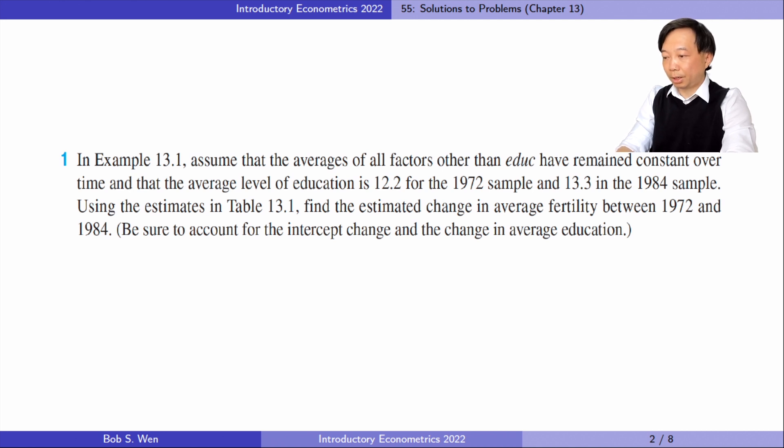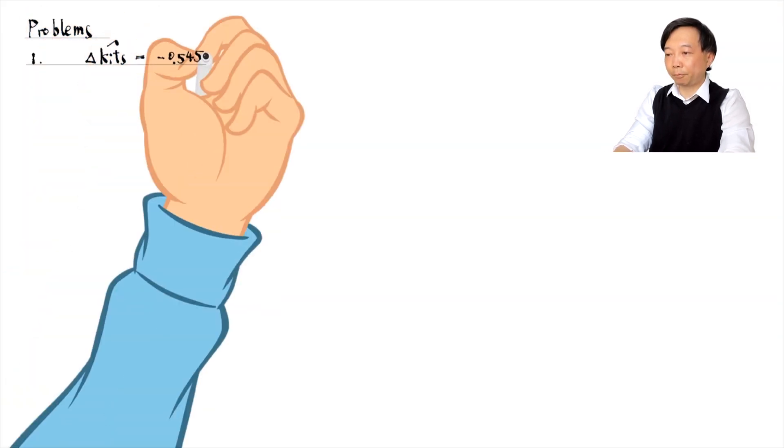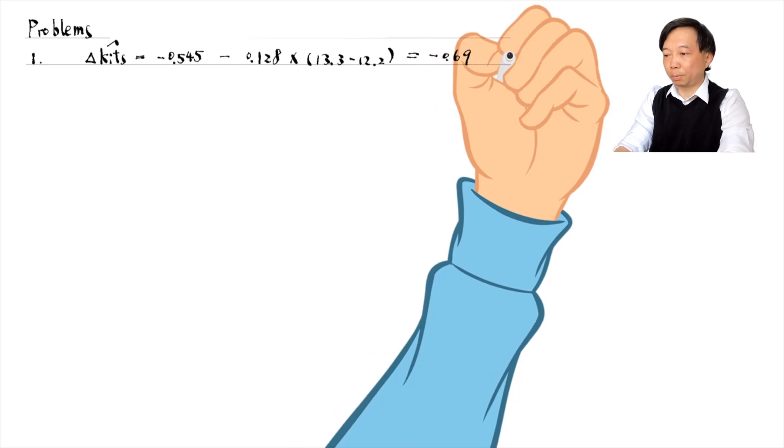find the estimated change in average fertility between 1972 and 1984. The coefficient on the year dummy variable, y84, is minus 0.545. The coefficient on education is minus 0.128. The change in the number of kids equals minus 0.69. It means holding the other variables in the model fixed, 100 women in 1984 are predicted to have about 69 fewer children than 100 comparable women in the base year 1972. The drop is due to education and the unobserved factors that are not captured by the other explanatory variables in the model.